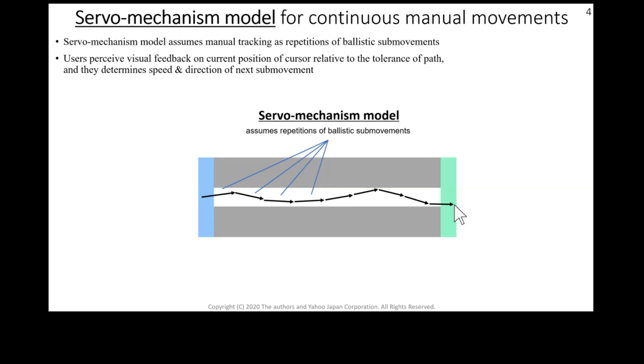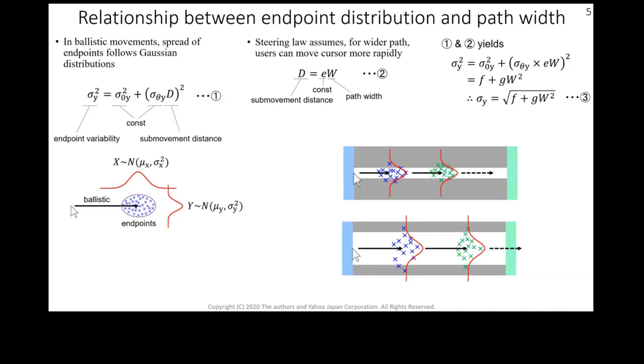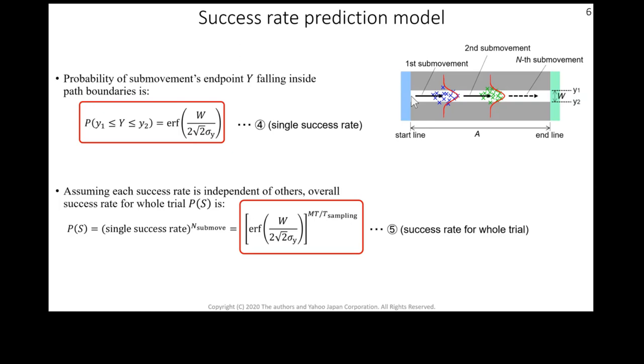First, endpoint distributions of ballistic motions follow a Gaussian distribution. And based on the steering law, a sub-movement distance is proportional to the path width. And the distribution, sigma, can be predicted by the path width. We can predict the success rate on whether a sub-movement endpoint falls inside the path boundaries.